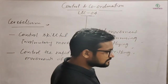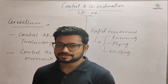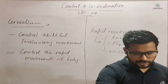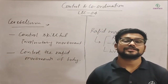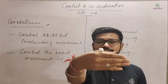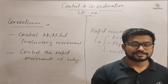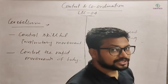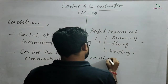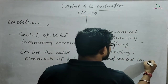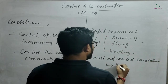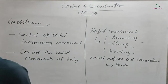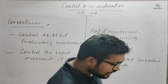The most advanced and developed cerebellum belongs to birds. Our body movements are two-dimensional — only on the earth. But birds have three-dimensional movement — they can go up, down, straight, or back. Because birds have three-dimensional movement, their cerebellum is most advanced.